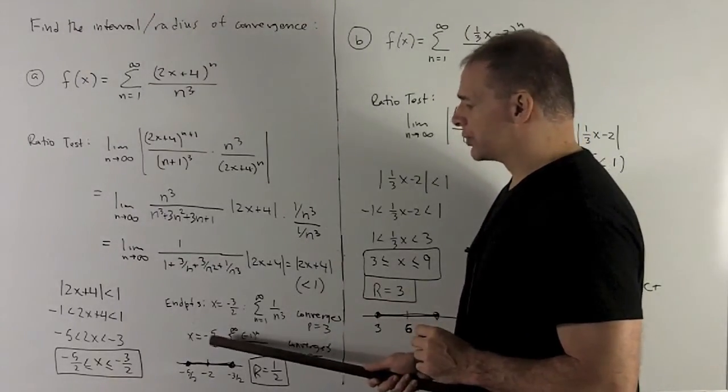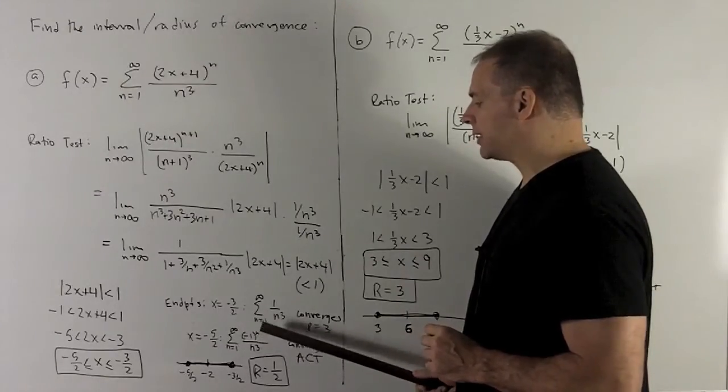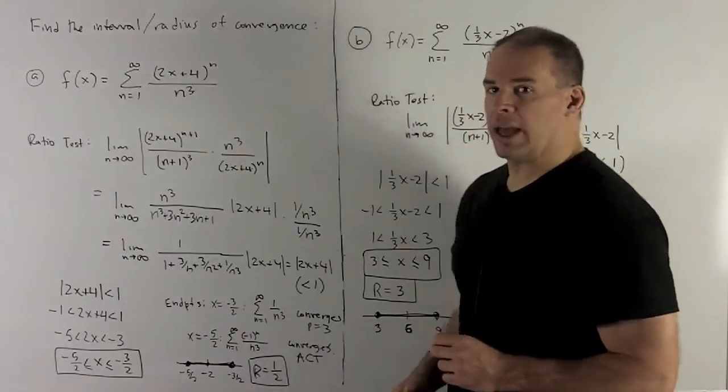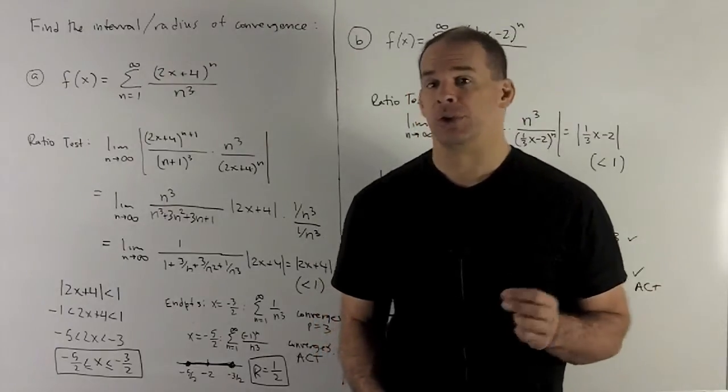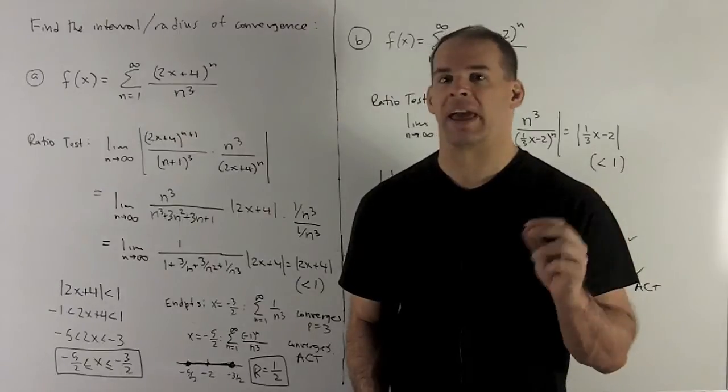Next, we're going to try x equal to minus 5 halves. So that's going to give me the series for minus 1 to the n over n cubed. And you have two ways you can do that. You could do the alternating series test. You'd have to show your three conditions. So we'll skip that.